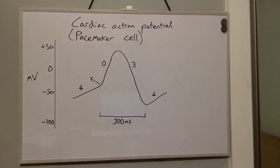In this video, we're going to discuss the cardiac action potential of cardiac pacemaker cells. The pacemaker potential is seen in cells of the cardiac excitatory system, namely the cells of the sinoatrial node.